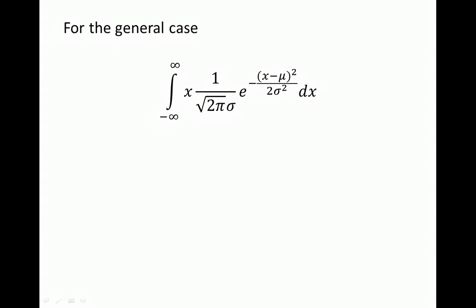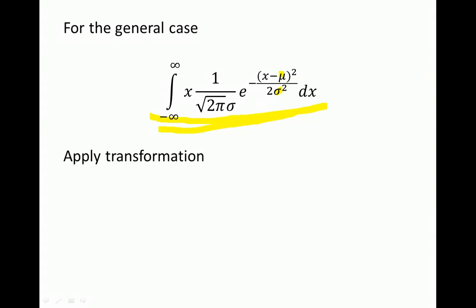We just showed that the expectation of a standard normal random variable is zero, which is expected since its mean is zero. Now we solve the general case: the expectation of a normal random variable with general μ and σ. The integral looks complicated due to the (x−μ)/σ term, so we apply a substitution.